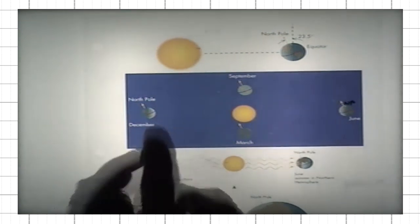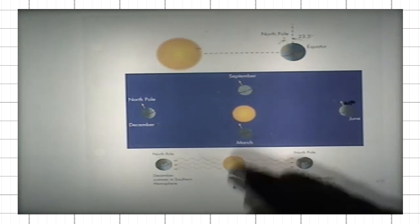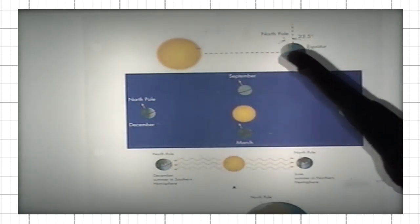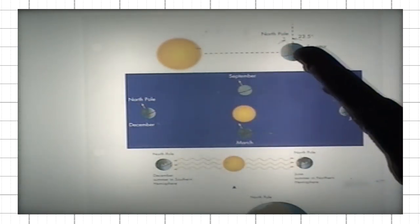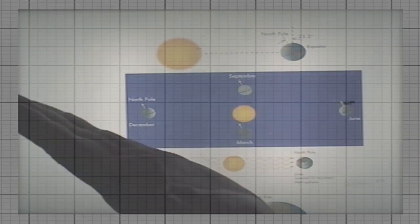The reason that we have seasons is that the Earth's rotational axis is tilted so that part of the year, the Northern Hemisphere receives more solar heating and six months later, it receives less.